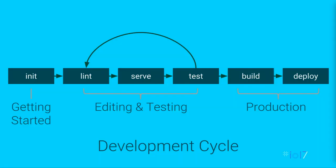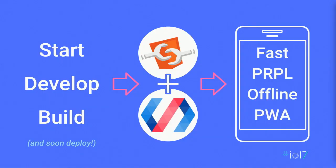And now that really covers the complete development cycle — all the way from getting started, through editing and testing, through production. If there's any one thing I want you to take away from this talk, it's that Polymer tools make it really easy to start, develop, and build with web components and Polymer, so that you end up with a fast, purple-enabled, offline-capable progressive web app. Thank you everyone for coming.